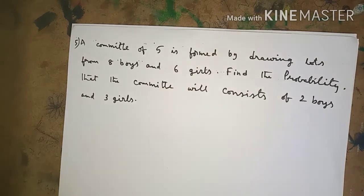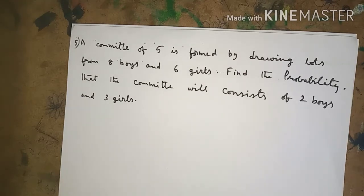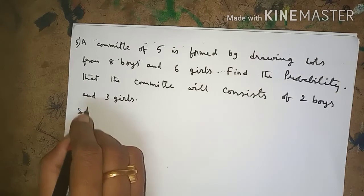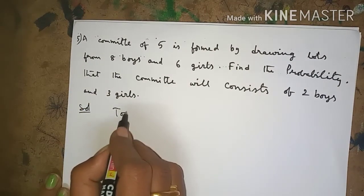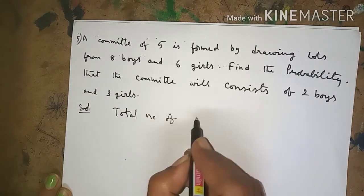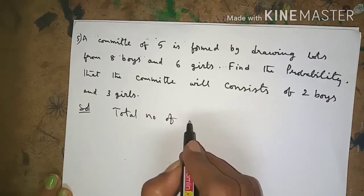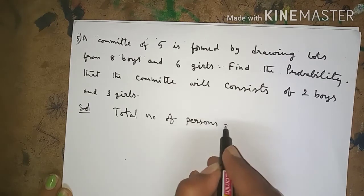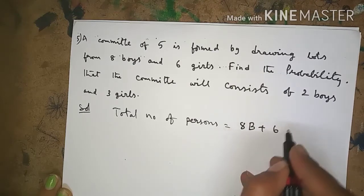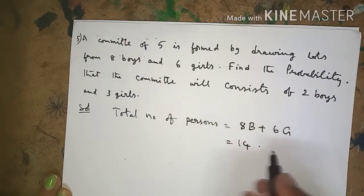A committee of five is formed by drawing lots from eight boys and six girls. Find the probability that the committee will consist of two boys and three girls. Total number of persons is equal to eight boys plus six girls, which equals 14 members total.